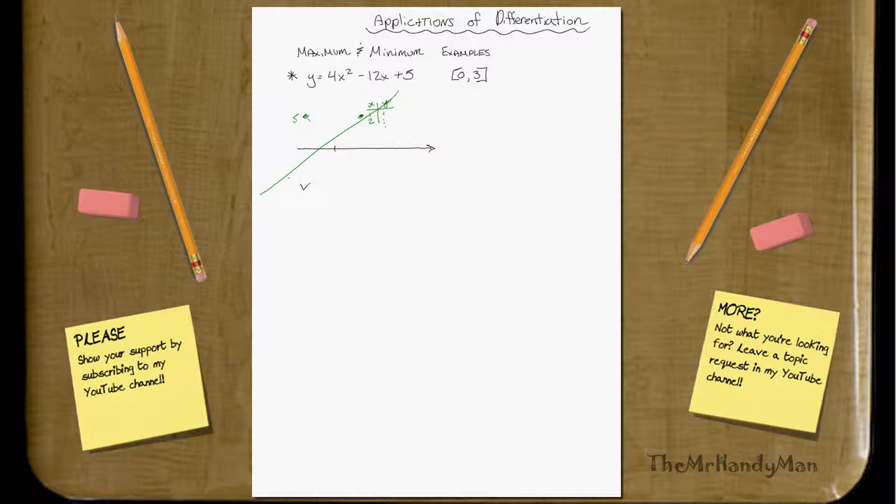First off, let's just solve for f prime, or function of prime, so y prime. Y prime will equal, okay, that would be 8x minus 12.